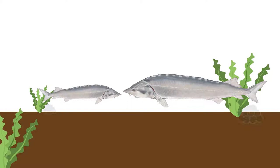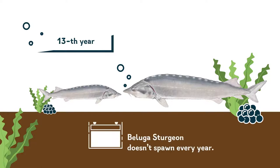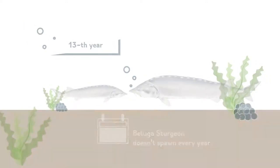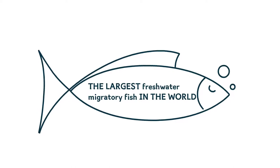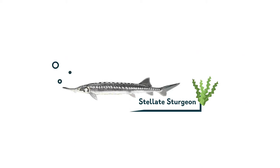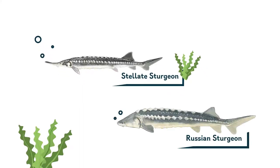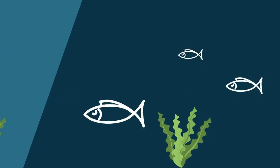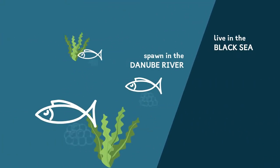Beluga sturgeon starts spawning quite late, when it reaches its 13th year, and what's more, they don't spawn every year. In fact, this is the largest freshwater migratory fish in the world, and it lives in the Danube. Stellate sturgeon looks really strange. Look at its long nose. More than half its head is its nose. The Russian sturgeon you can easily recognize by the strange stars on its back. The beluga sturgeon, stellate sturgeon, and Russian sturgeon all live in the Black Sea and spawn in the Danube River.